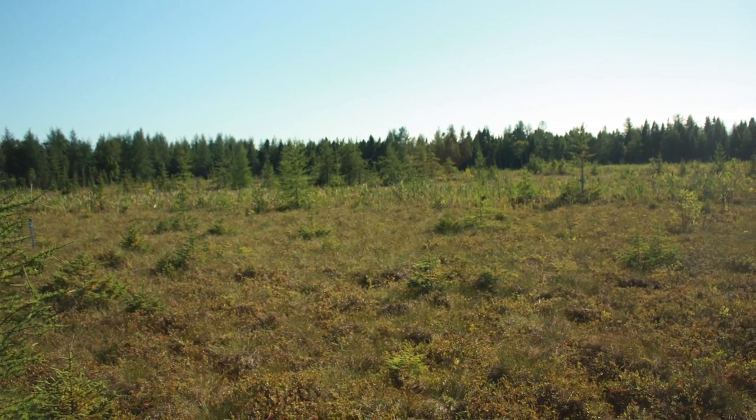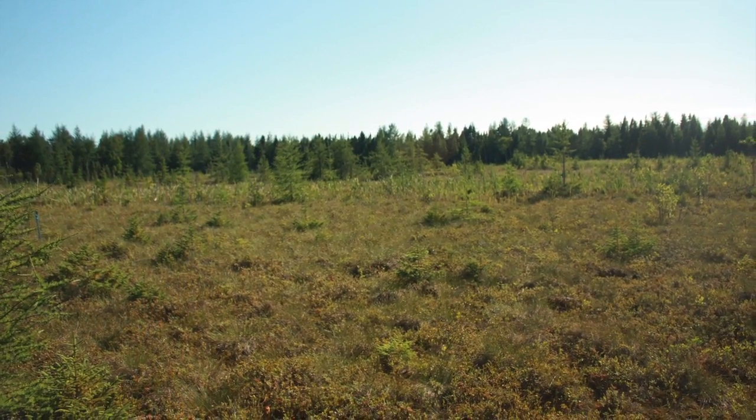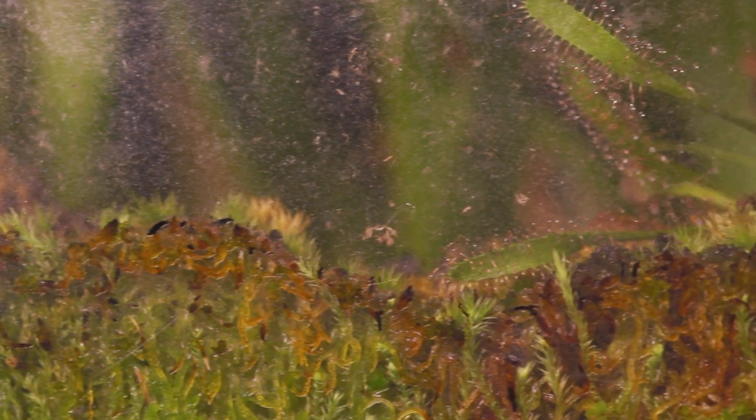Les tourbières minérotrophes ou fennes sont à la fois alimentées en eau par la pluie et par les eaux souterraines. Donc, ils ont aussi un apport de nutriments qui proviennent de la nappe phréatique. Tandis que les tourbières ombrotrophes, qu'on appelle aussi les bogs, sont seulement alimentées par les eaux de pluie. Donc, ça fait en sorte que la chimie de l'eau dans ces milieux-là est complètement différente, ce qui va avoir une influence sur les communautés végétales puis sur toute la faune qui l'habite.